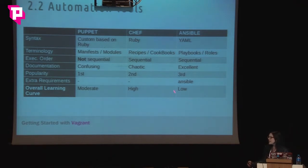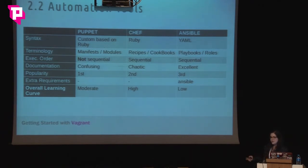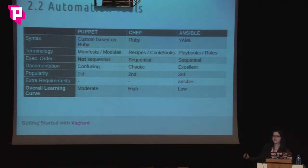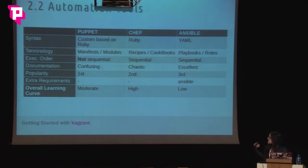The recipes in Chef are organized into cookbooks. In Puppet, the equivalent are manifests organized into modules. The documentation of Chef is very chaotic — it's very hard to find things there, so getting started can be very hard. The overall learning curve is high for Chef and moderate for Puppet.